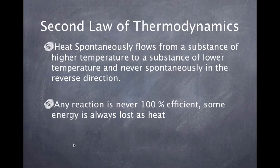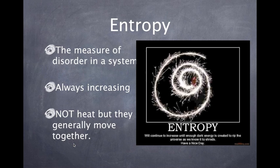The second law of thermodynamics says that heat spontaneously flows from a substance of higher temperature to a substance of lower temperature and never spontaneously in the reverse direction. It also says that any reaction is never 100% efficient because some energy will always be lost to the surroundings due to heat. This is just another way of saying that entropy always increases. Entropy is the measure of disorder in a system. It is always increasing.